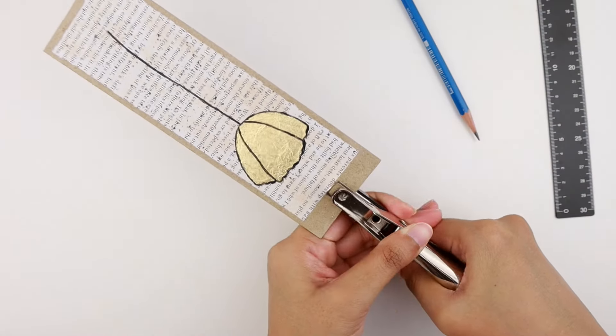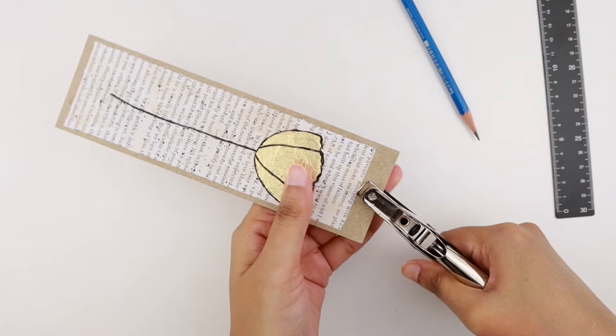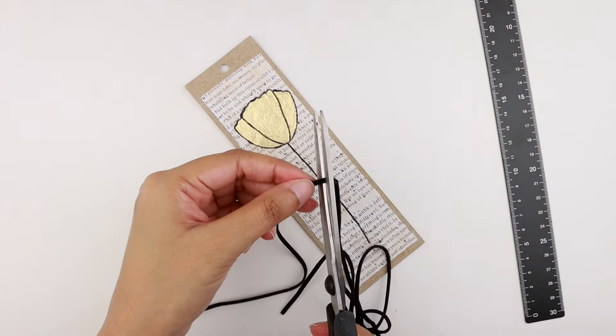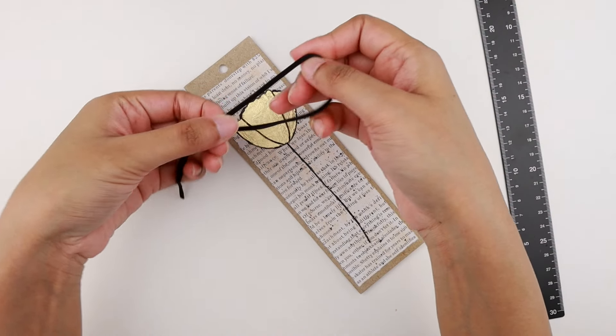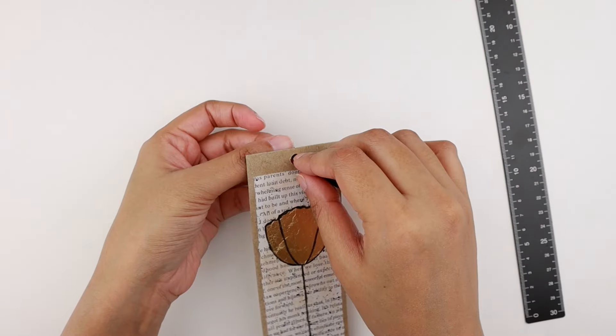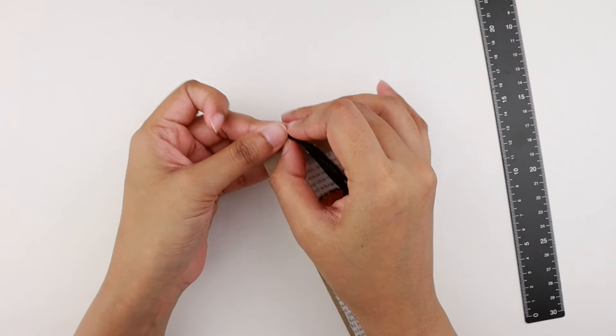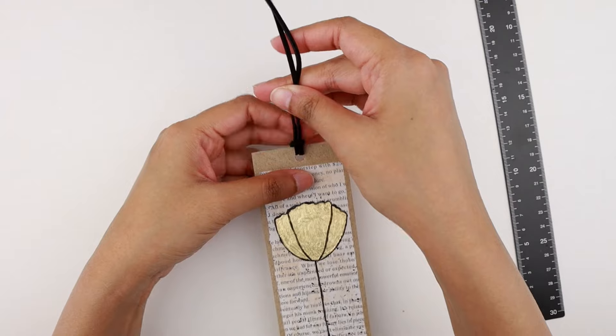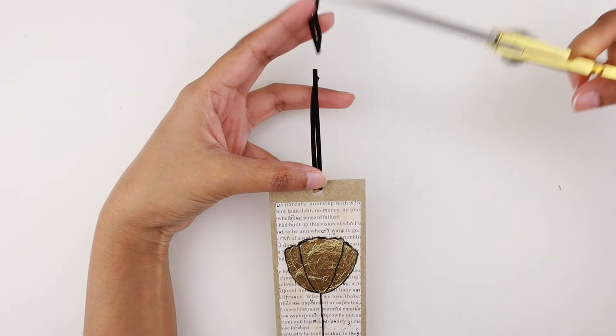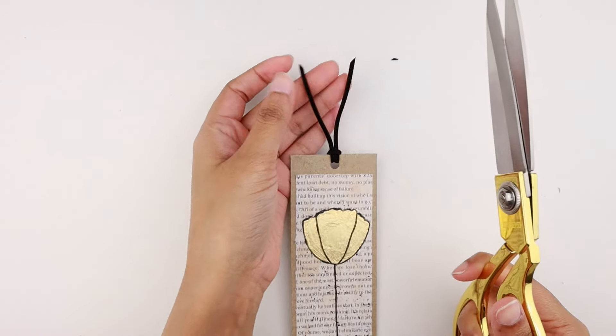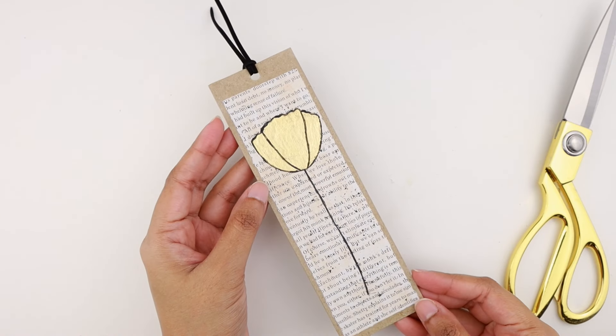After locating the center, I'm making a hole at the top with a hole punch. Then I'm cutting a piece of black faux leather cord and folding it in half. I'm pulling the loop through the back of the bookmark. And then I'm putting the ends into the loop and pulling them tight to make a lark's head knot. I'm trimming the ends to make them even and also cutting them at a 45 degree angle to give them a little more definition.